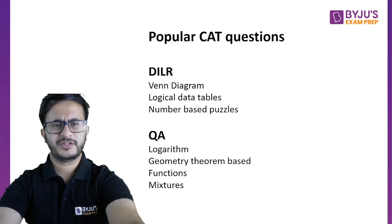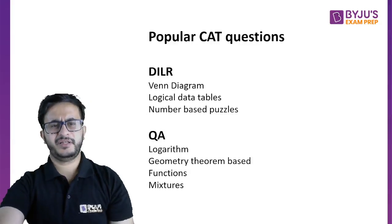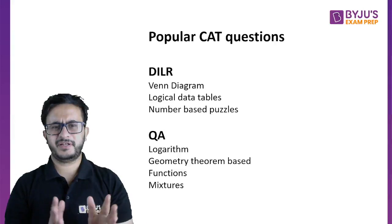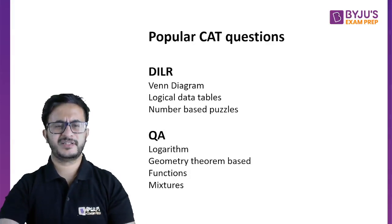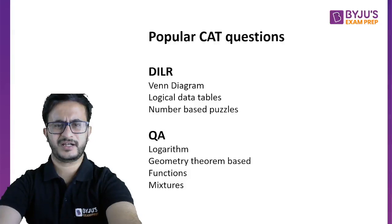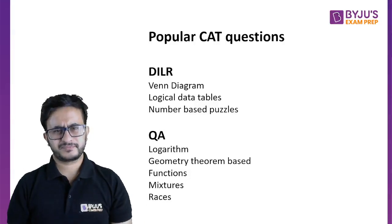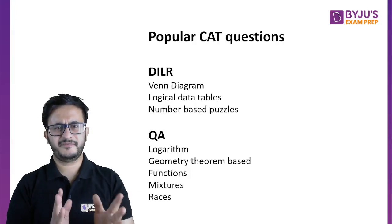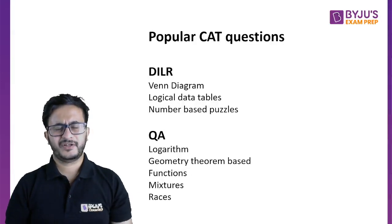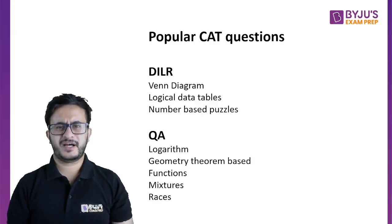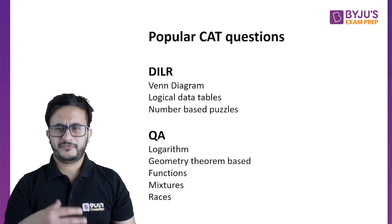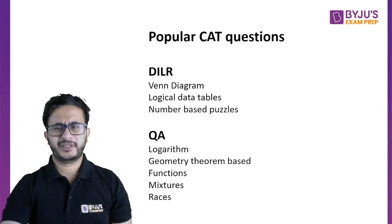And then questions on mixtures — a very frequently asked topic when it comes to arithmetic. Although there are a lot of topics in arithmetic, mixtures is something that is generally asked every other year. And then questions on races — time, speed, and distance — the favorite subcategory of CAT is based on the concept of races. So these are some of the popular questions that are asked in CAT very frequently and you must be knowing them.